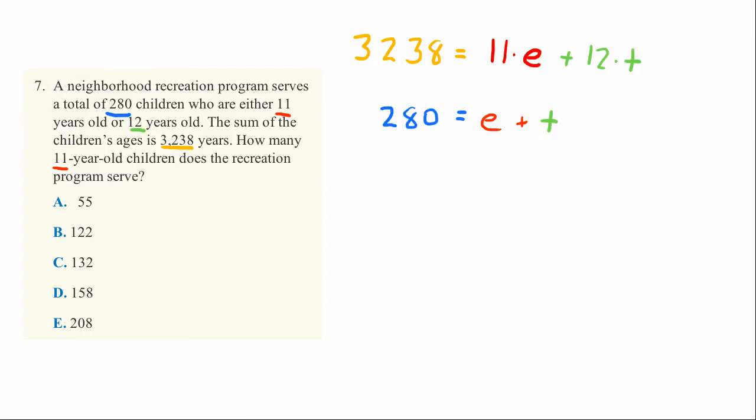There are many ways to solve this, but I like to isolate a variable. We can subtract E from both sides to get 280 minus E equals T.